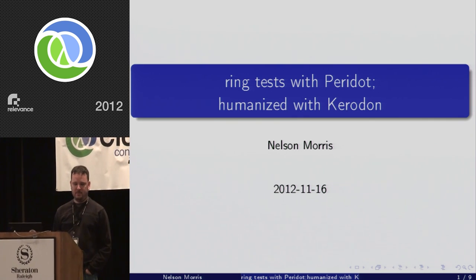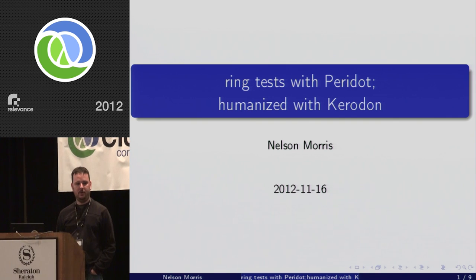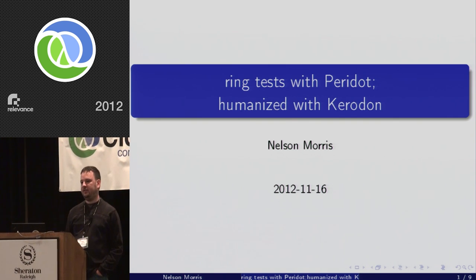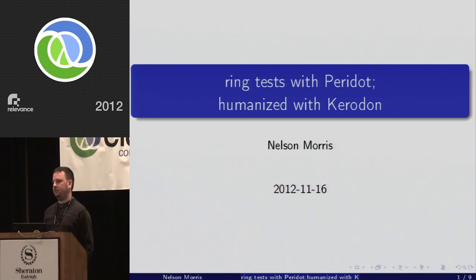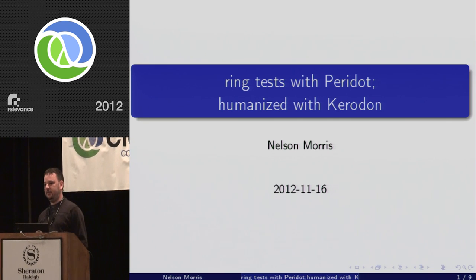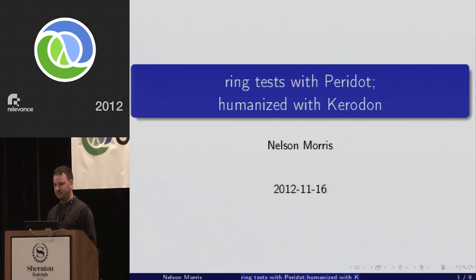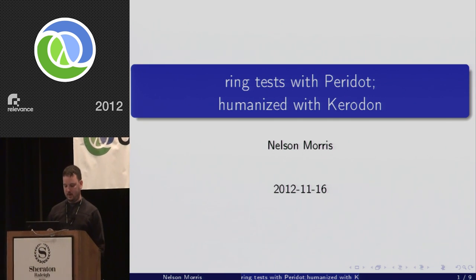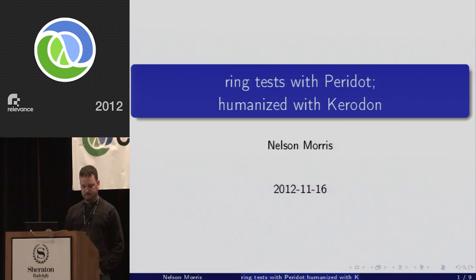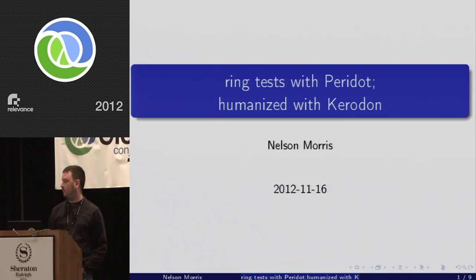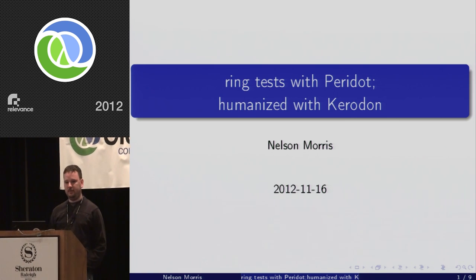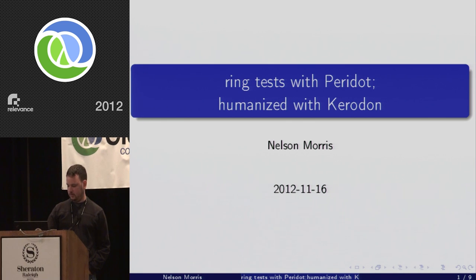I'm a big fan of tests for my programs, particularly ones that are acceptance tests — where the user actually logs in and when they log in they can view their photo stream, or something in that direction. Towards this end, I've built a couple of libraries for doing Ring interaction and testing.